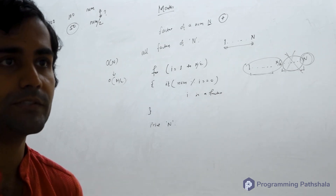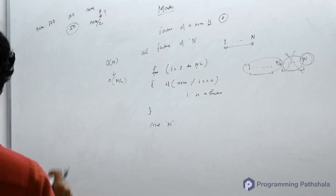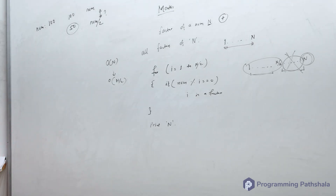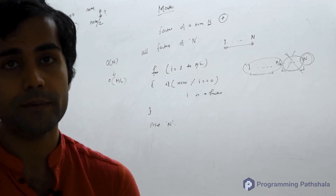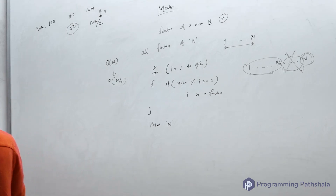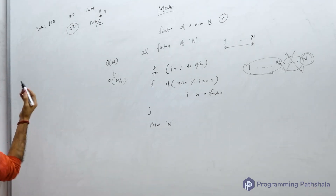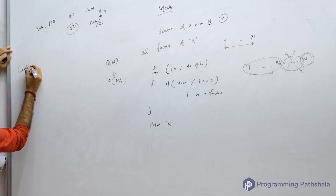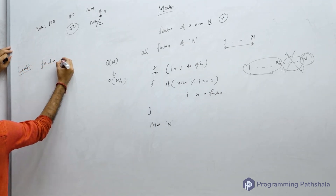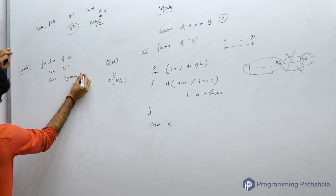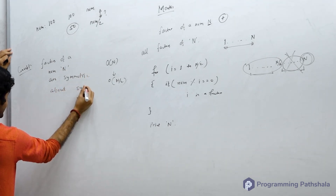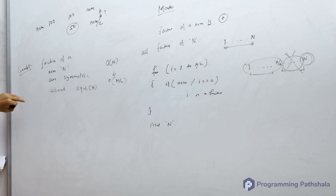Can we do even better? Yes — we can do it in O(√n). Before we learn how, there is a very important concept you must remember: factors of a number n are symmetric about the square root of n. This concept is used to solve many tough problems.